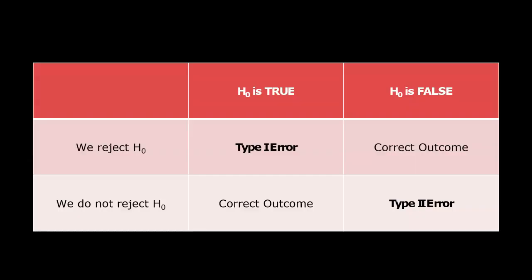Now here's just a table to show when type 1 errors happen, when type 2 errors happen, in relation to the correct outcomes that we should have.